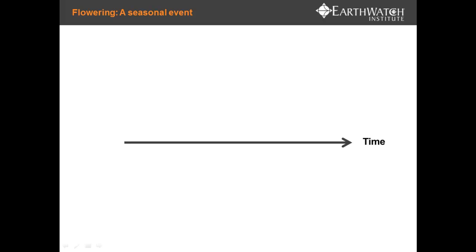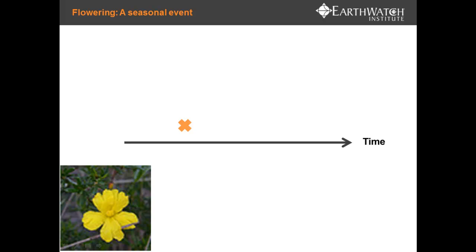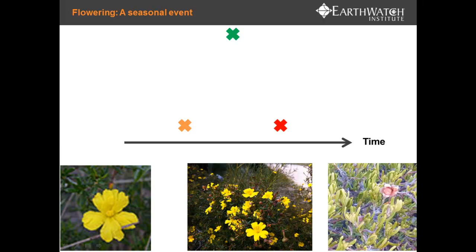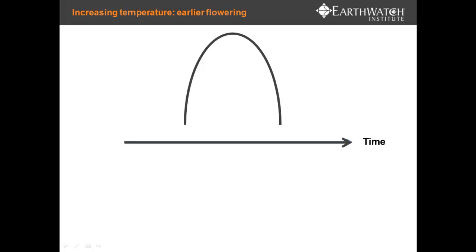I'll now explain how these seasonal observations fit together. For example, with flowering, there are a couple of crucial events based on standards used internationally. You have the first fully open flower — a very distinct event. Next, there is full flowering, which is when more than 50% of the flowers are open. Not all flowers open at exactly the same time, but when more than half of the buds are open, that plant is considered to be in full flowering. Finally, at the end of the season, when 95% of the flowers are dried out, it is the end of flowering. With a change in temperature, we're likely to see earlier flowering — first flowering happens earlier, full flowering happens earlier, and the end of flowering happens earlier. You can see there's a shift in that seasonal event.